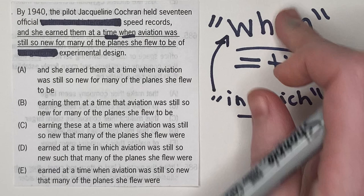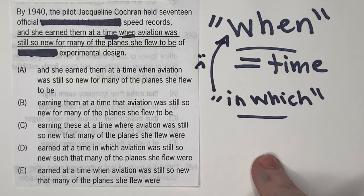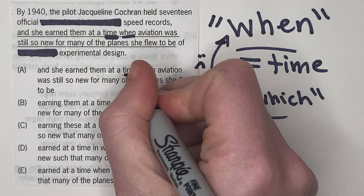So if you can just replace when with in which, or I guess the arrow should go the other way, that is a sign that when is wrong. All right, so let's not look at anything else in the sentence. Let's just examine that piece for now.